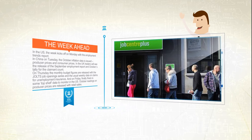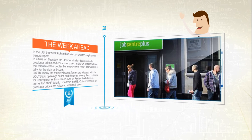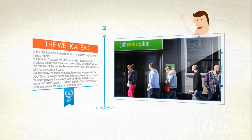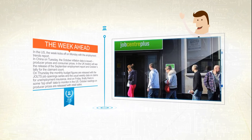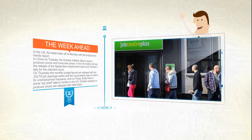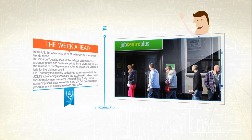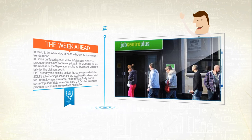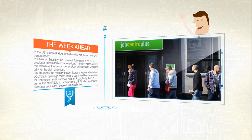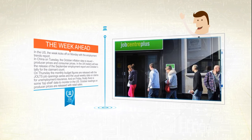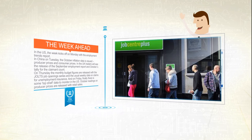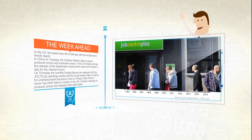In the UK, traders will see the release of the September employment report and October's tally for the claimant count. These were to be published alongside a raft of second tier indicators on retail sales and house prices.